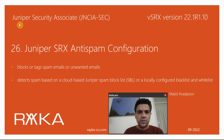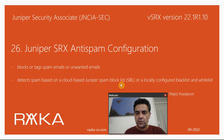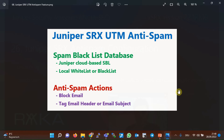Welcome to another video of the Juniper Security Associate course. In this section we will see how to configure the Juniper SRX anti-spam feature, another feature of the UTM section. It detects and then blocks or tags spam. The detection is based on a cloud-based Juniper spam blacklist or a locally configured blacklist. Juniper SRX UTM has four features; in the previous section we discussed the anti-virus feature, and in this section we will discuss anti-spam. Content filtering and web filtering are discussed in the next sections.